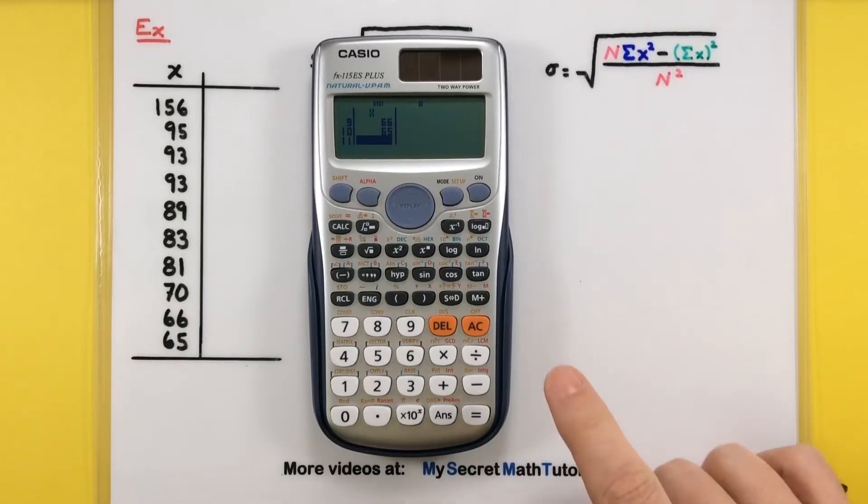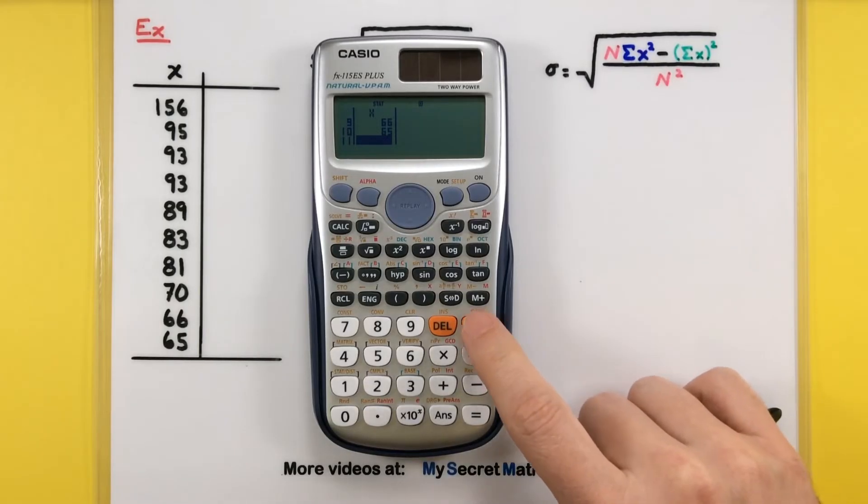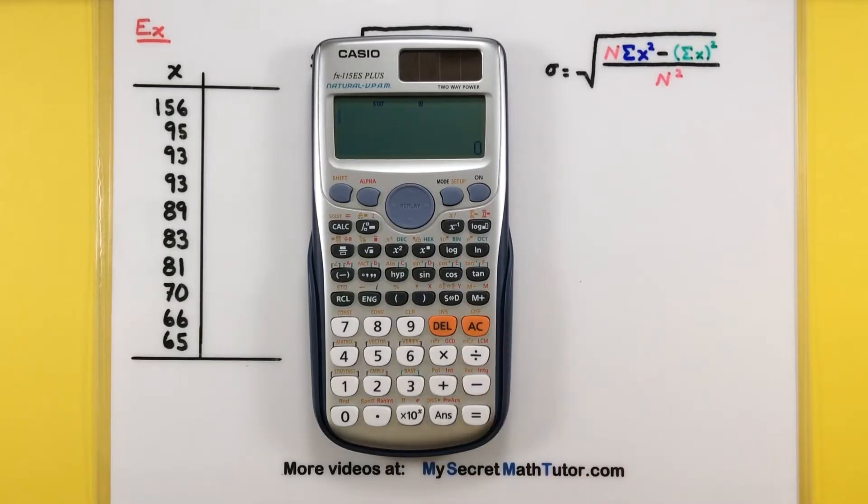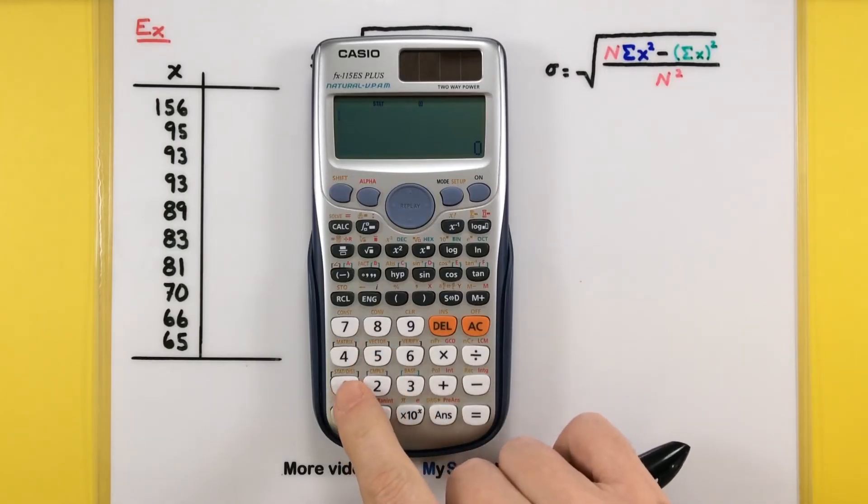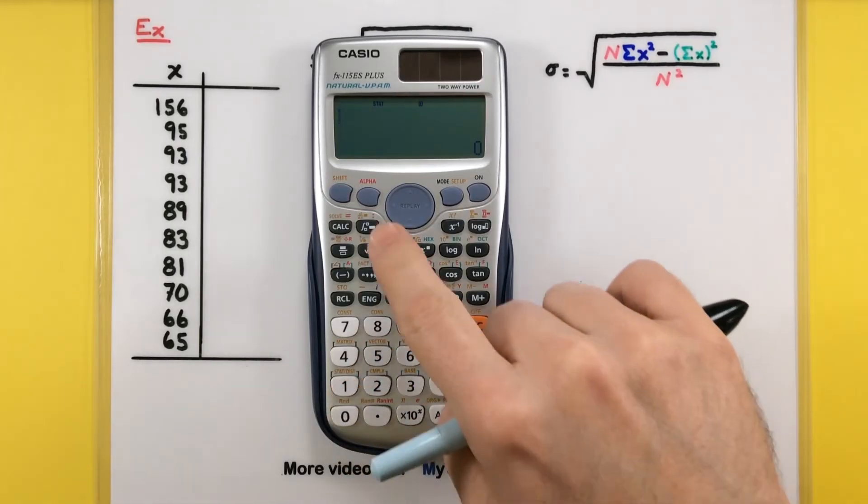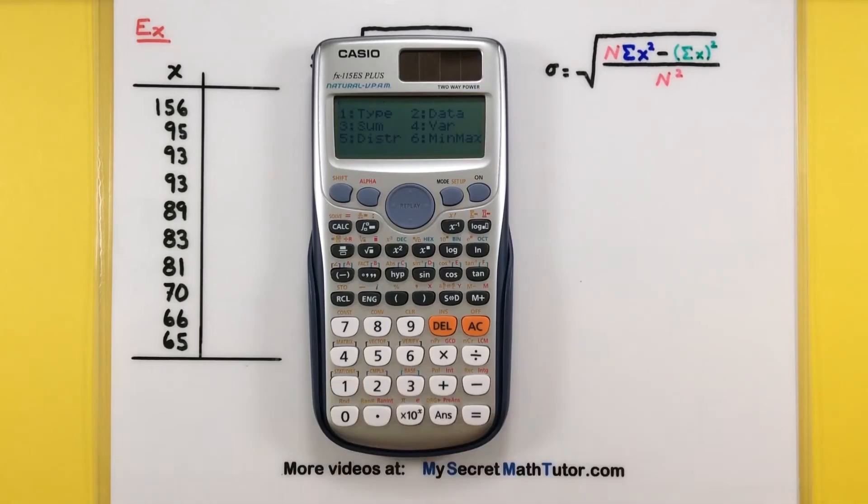First we need to exit out of here. So press the AC button, that's the all clear button. Don't worry, your data is safe. We just need to get to a different screen. Now, how do we have it calculate the standard deviation? You're going to press shift and then down here for number 1 where it says stat slash distribution. So shift number 1. And now we have lots of different things we can do with this data. Since standard deviation is a measure of a type of variation in the data, we'll select number 4.